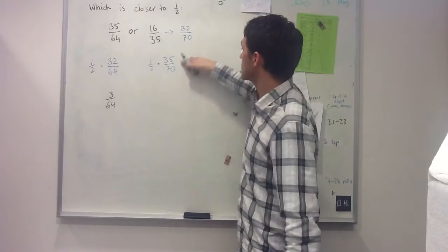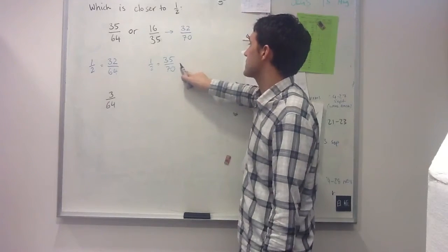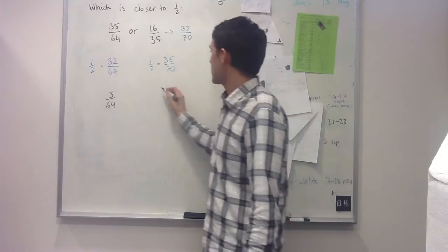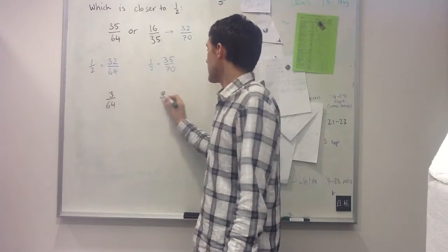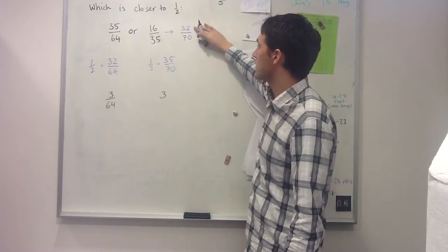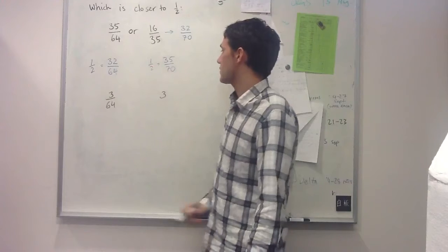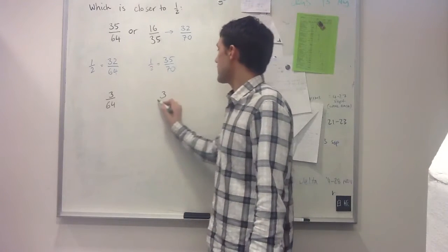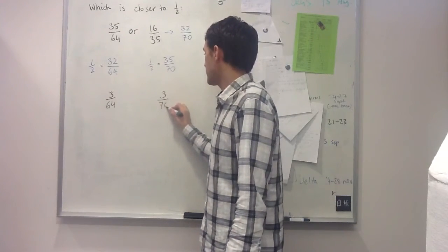Here when I look at the difference between these two fractions, I again get a difference of three in the numerators, although this number is smaller than a half whereas this number is larger than a half. So three over 70.